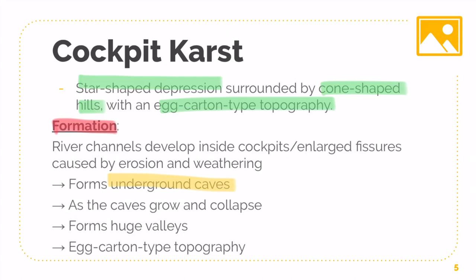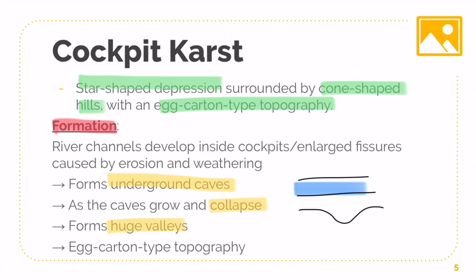When the cave collapses, it actually forms huge valleys. Think of it like this: as there's a lot of water running through, the cave may start to collapse. Repeated amounts of this will actually form your Cone Cast — or your Cockpit Cast — which is basically the remaining elevated portions. As a result, it gives rise to an egg-carton type topography, as just mentioned.